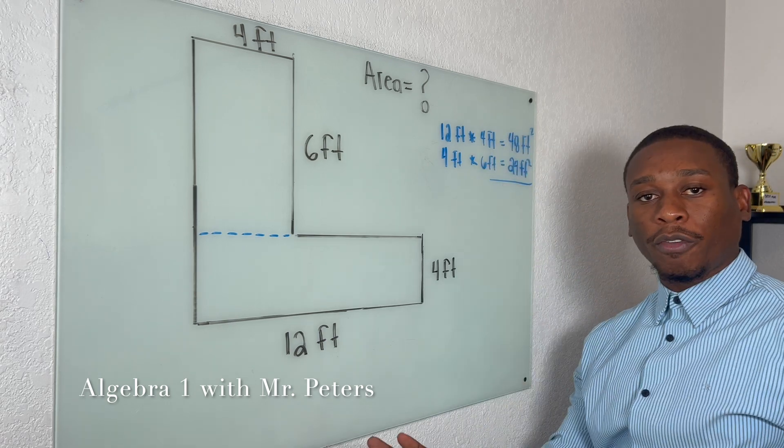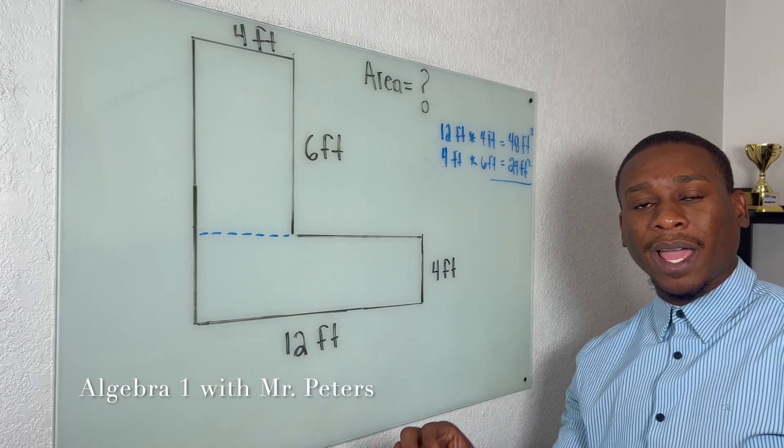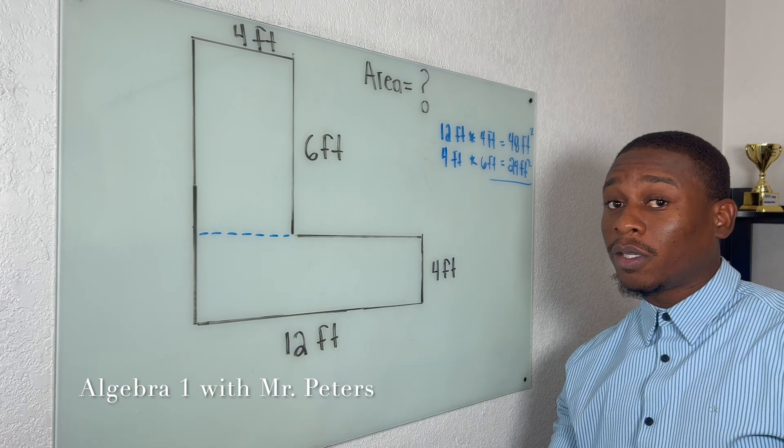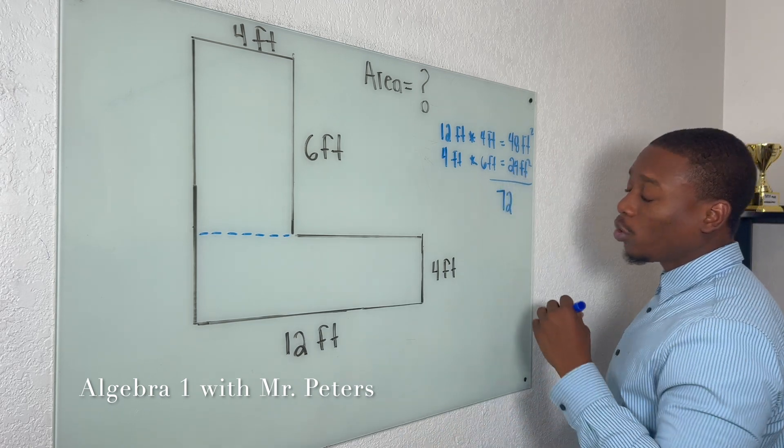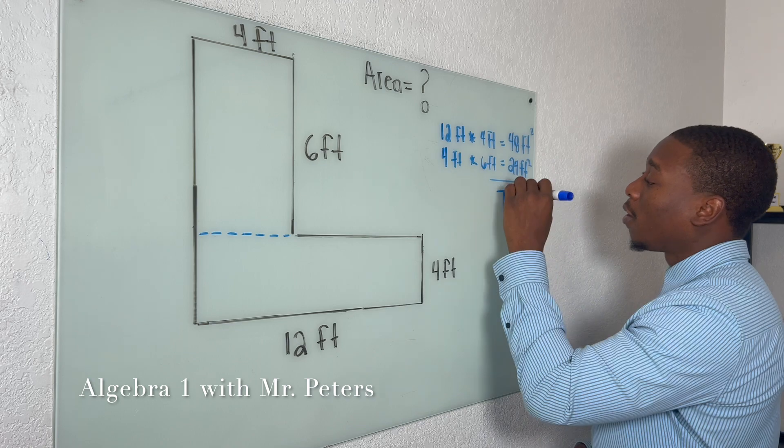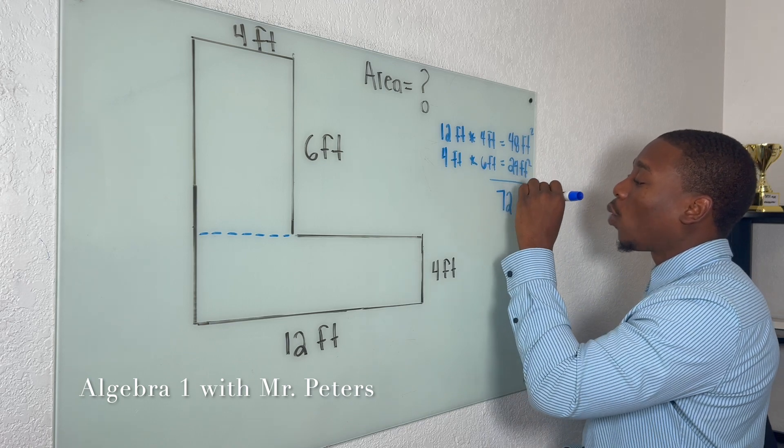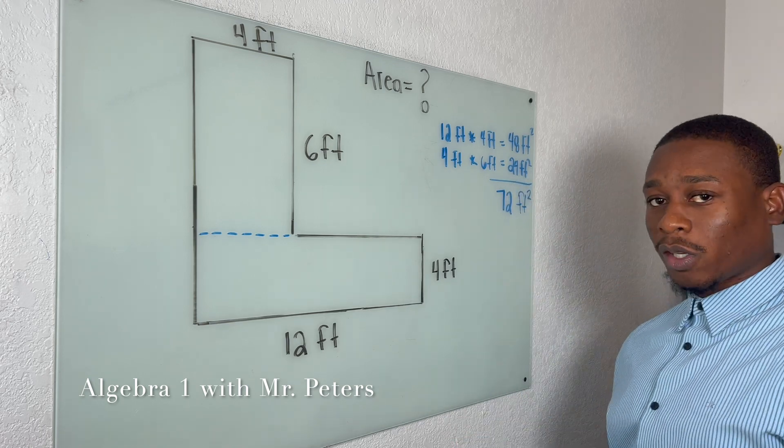Now, after we find the area for both figures, just don't forget to add it. I see students make that mistake often. Don't forget to add. And when we do, we're going to have 72, don't forget the units, feet squared. So this is how you would solve.